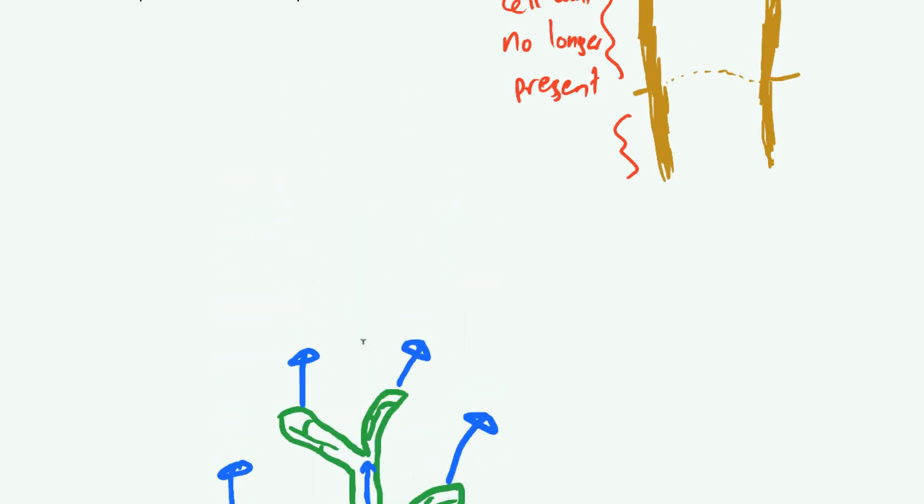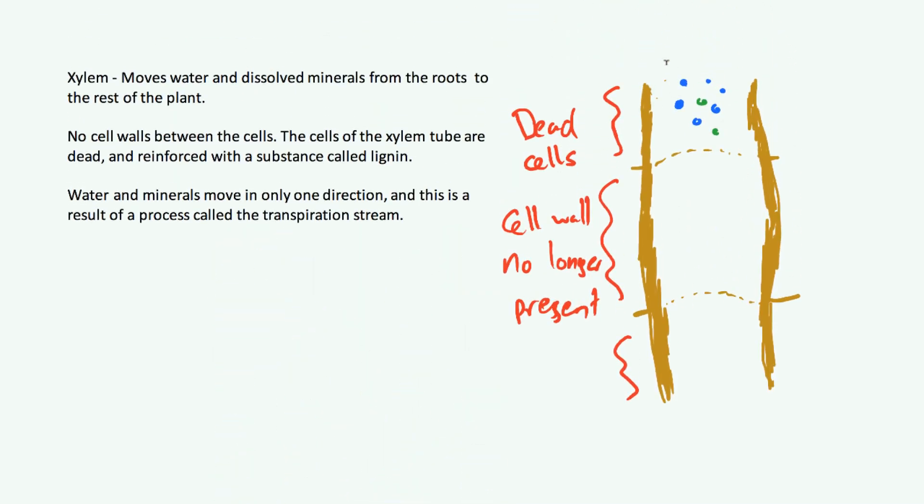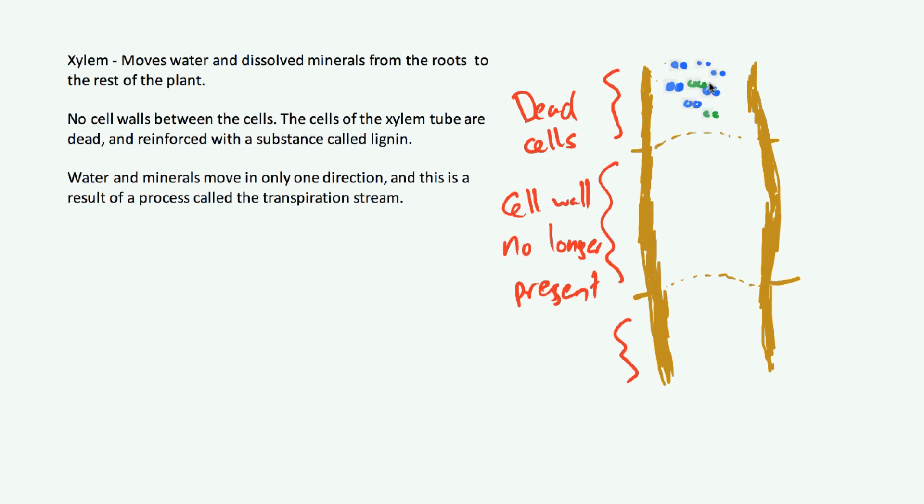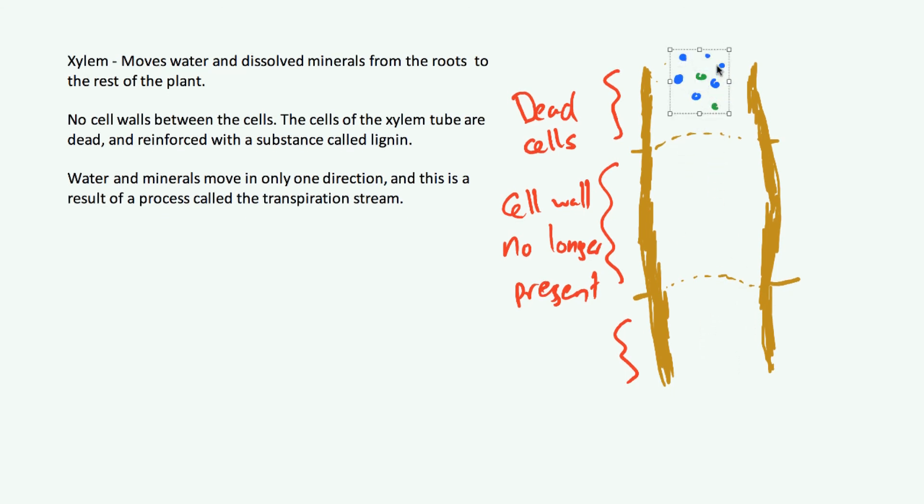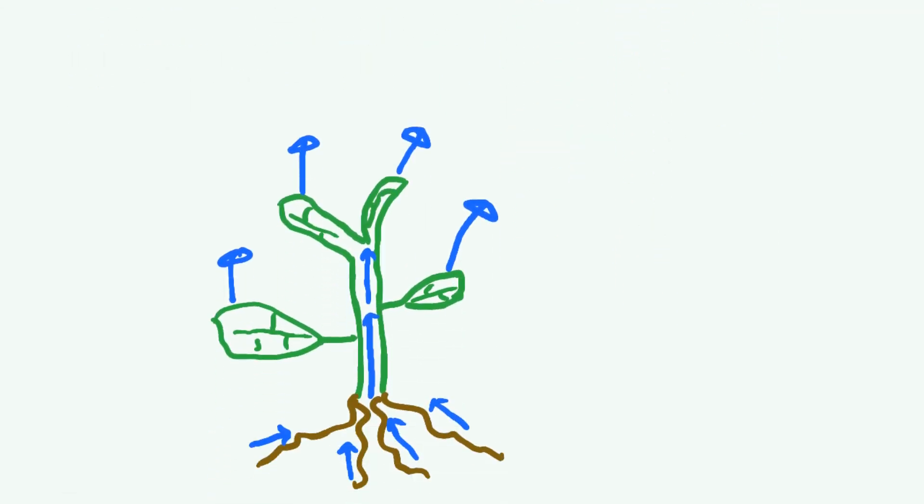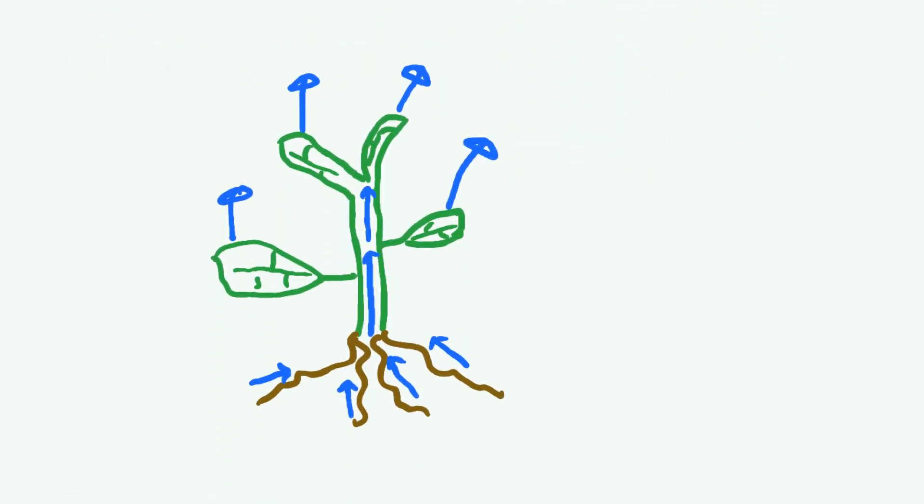As that water rises up to the top of the plant, the water will be lost by transpiration. That creates a pressure difference, and now more water is sucked up through the plant. That is what drives the unidirectional movement of water through the xylem. Transpiration occurs at the leaves, causing more to be sucked up from the bottom. It's not going to go the other way because you're not losing water via transpiration from the roots.